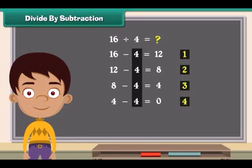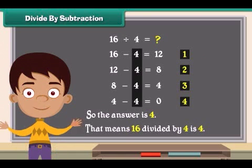Four 4s have been subtracted, so the answer is 4. That means 16 divided by 4 is 4.